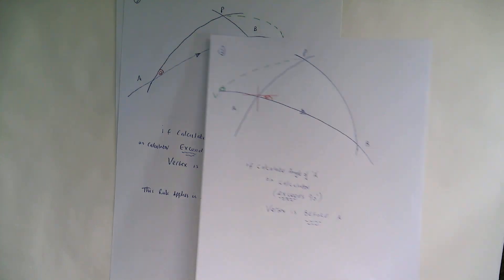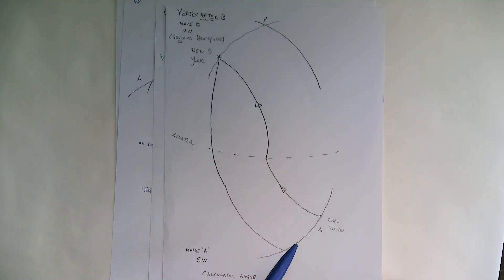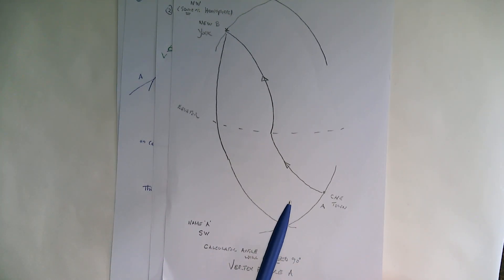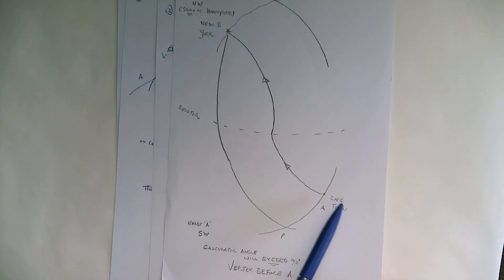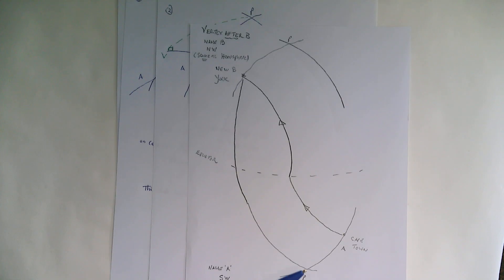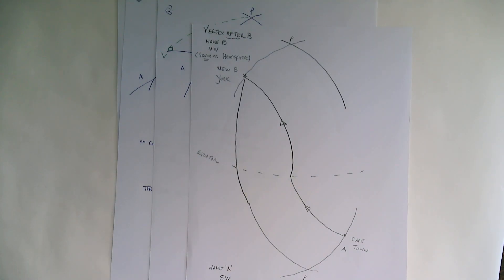And just to quickly look at going between hemispheres. If you're going from, say, Cape Town to New York, then you'll find that your angle will always exceed 90. Your vertex will be before your initial position, after the final position.